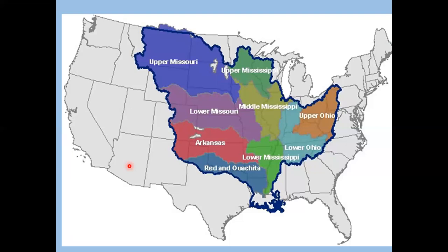Here is the drainage basin of the Mississippi River — look how huge this is. Major rivers like the Ohio, Missouri, Arkansas, and Red Rivers all flow into it. Think of all the activities within this basin: industrial activity, farming, pesticides, water treatment plants, treated sewage — all of that flows into the Mississippi and these other major streams. It is an enormous drainage basin.